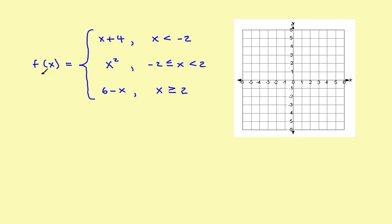A piecewise defined function is exactly what it sounds like — it's a function that's defined in pieces. Here's an example with three pieces. f of x is equal to x plus 4 whenever x is less than negative 2, then x squared whenever x is between negative 2 and positive 2, and finally 6 minus x whenever x is greater than 2.